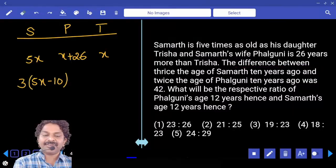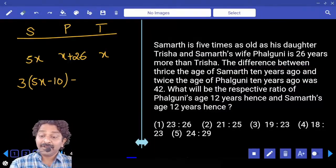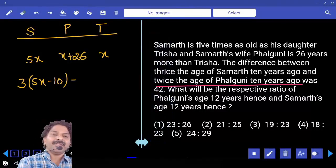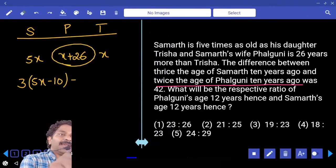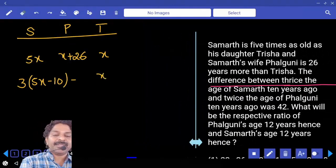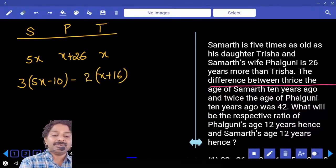Difference of this number and twice the age of Phalguni 10 years ago - present age of Phalguni X plus 26, 10 years back minus 10, that becomes X plus 16 only. And how many times? 2 times.